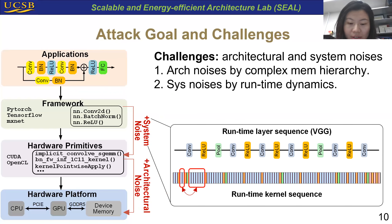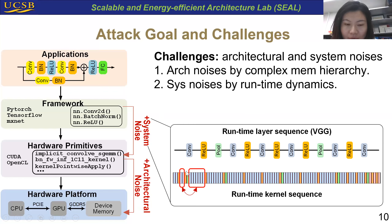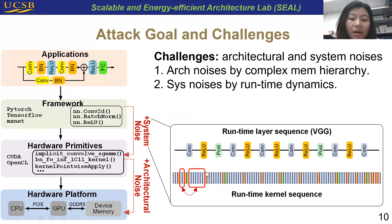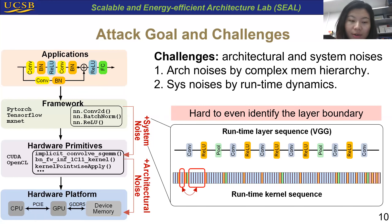Here is an example. This figure shows the transformations from the runtime layer sequence to the runtime kernel sequence of VGG. The blue bars represent the implementations of the convolution layers. Even for the same convolution layer operators, they have different implementations — the first one launches two kernels and the second one launches seven kernels. The intrinsic reason is that the cuDNN library may select different hardware primitives, such as Winograd, FFT, or GEMM-based implementations during runtime. Therefore, it's even hard to identify the layer boundary, not to mention the detailed layer type.